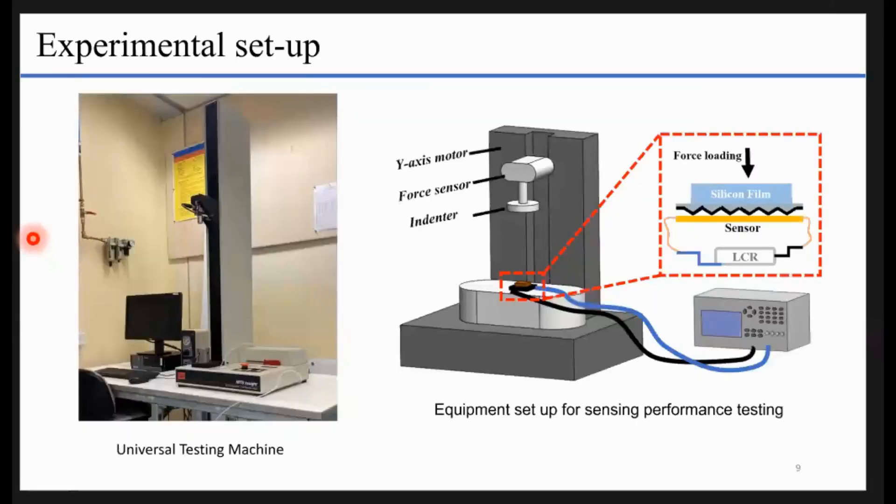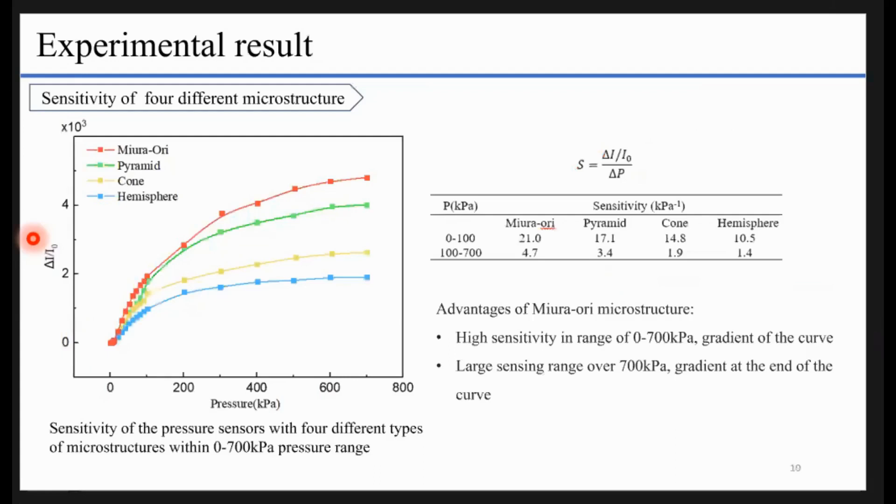Here's our experiment setup. We use a universal testing machine to precisely control the pressure applied on the sensor, and we use the LCR meter to read out the signal. To investigate how the microstructure affects the sensing performance, we fabricated three other commonly used microstructures with the same feature size and tested them under the same experiment condition.